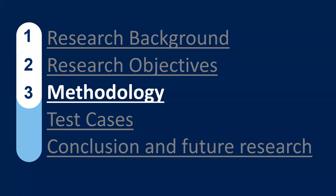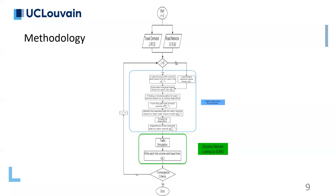Now let's speak about the methodology itself. Here we have the general framework of our algorithm. This algorithm is based on the DuaIterative tool in SUMO. DuaIterative is the dynamic user equilibrium tool in SUMO. The difference between our algorithm and DuaIterative is that in this algorithm we replace the travel times by marginal travel times. This algorithm consists of two parts: the path selection procedure and the dynamic network loading procedure.